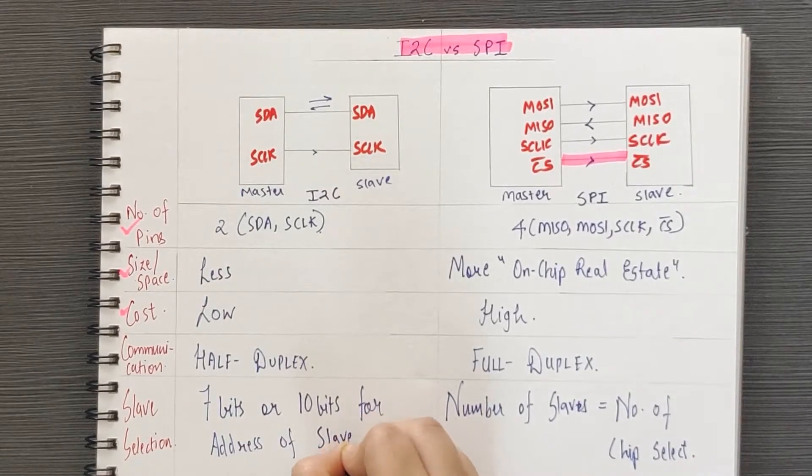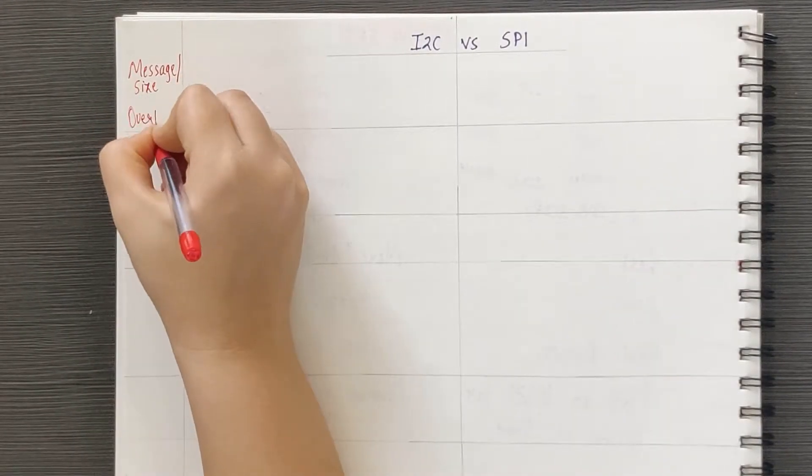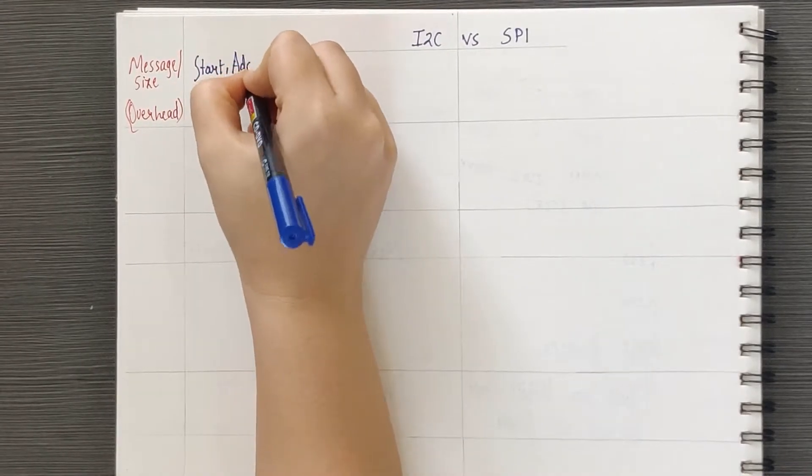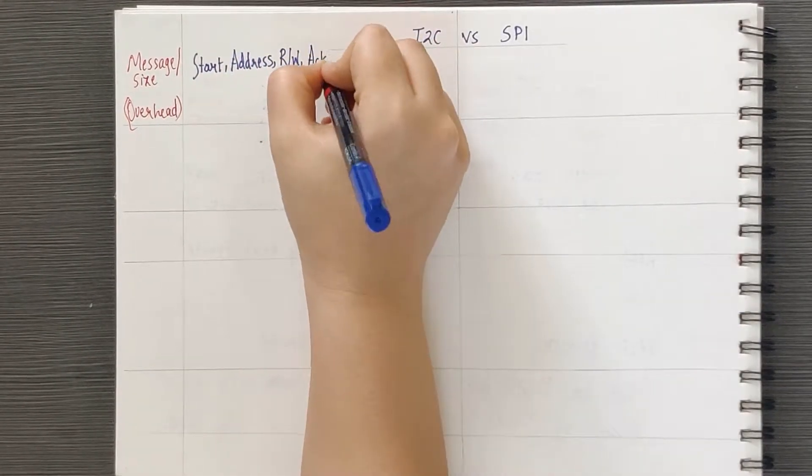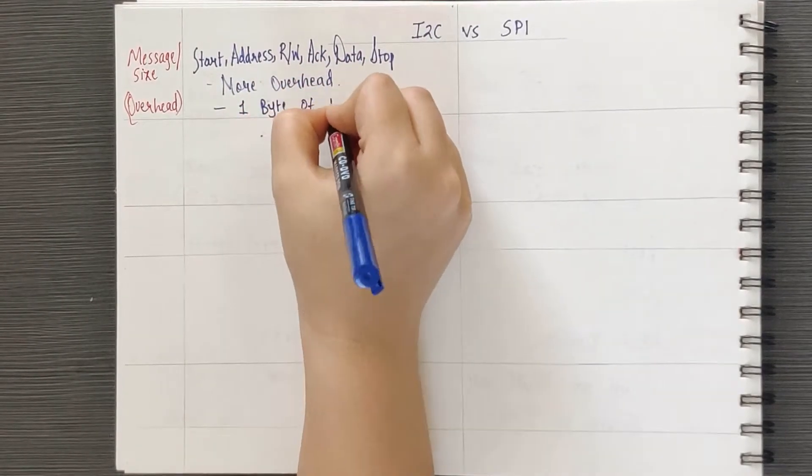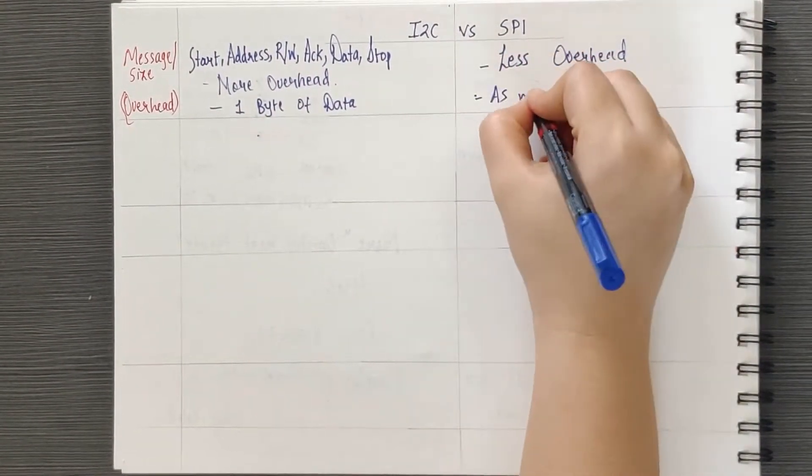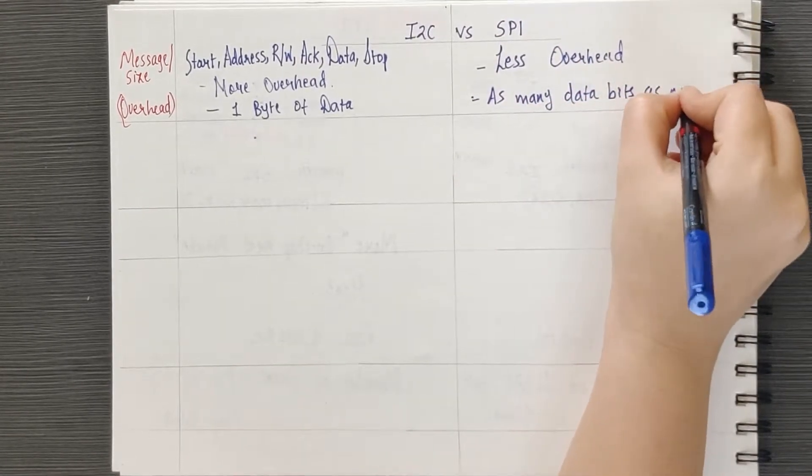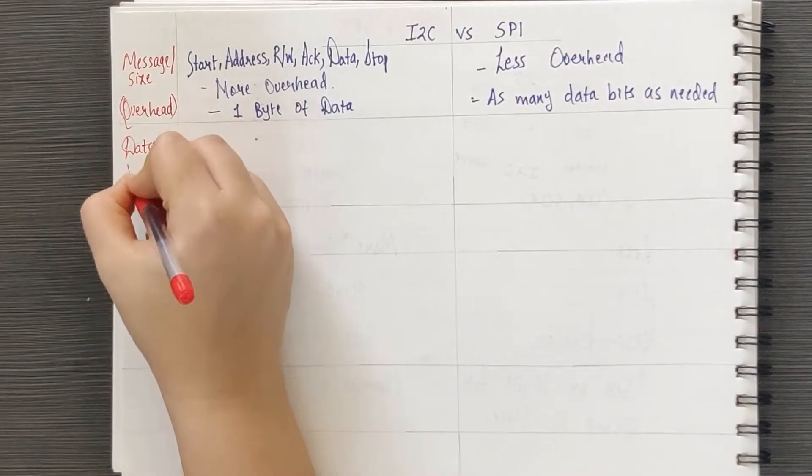Due to the address bits, start and stop bit, and acknowledgement bit, there is more overhead in case of I2C for point to point communication. In SPI, there is no such overhead. Also, one can transfer as many data bits as required. In I2C, one can send one data byte at a time.